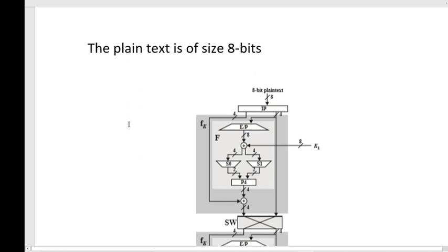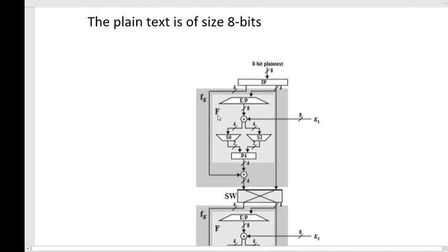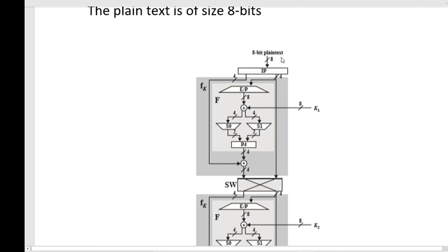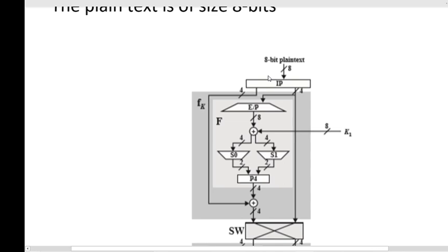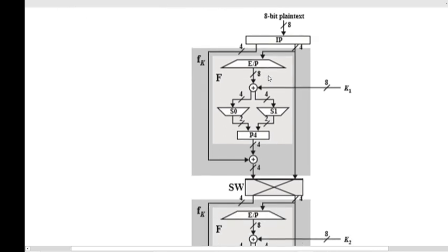Initially the size of my plain text is an 8-bit number. We apply an IP table on the 8-bit number, and the output is also an 8-bit number. We divide the 8-bit number into two halves: the left half and the right half. We apply an EP table on the right half, so the output will be an 8-digit number — in the EP table the input is a 4-digit number and the output is an 8-digit number. Then perform the XOR operation between the output of the EP table and Key 1.